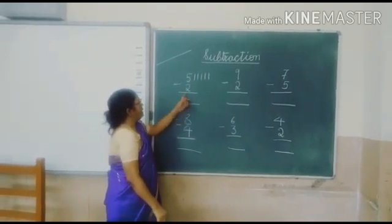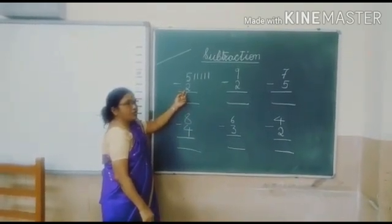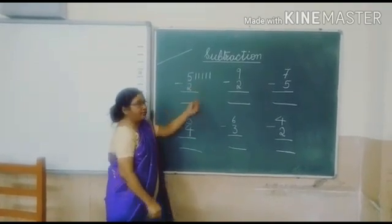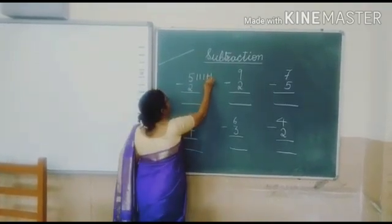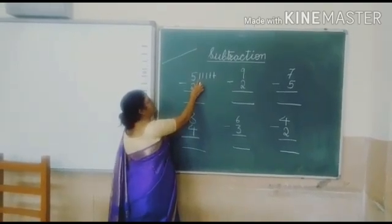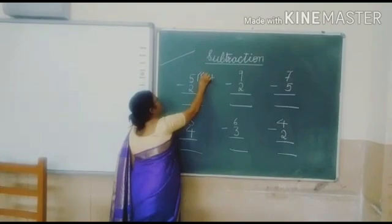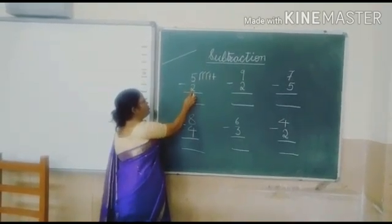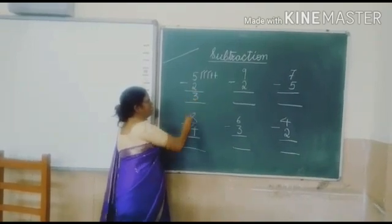And next is 2. So you will cut 2 lines over here. Now 1, 2. Now how many lines left? 1, 2, 3. So 5 minus 2 is 3.